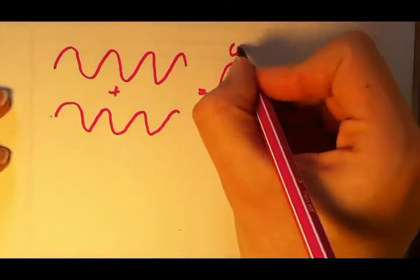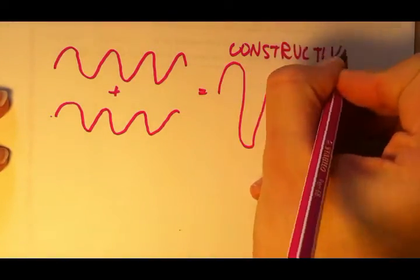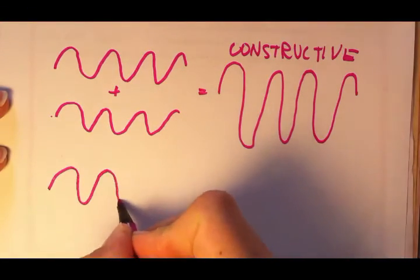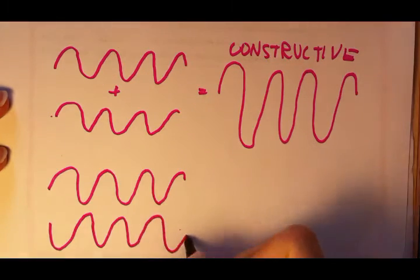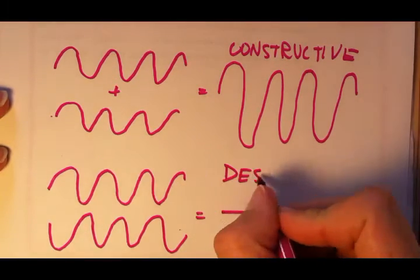When the two waves are added, at the places where they are both positive, they simply add their amplitude to produce constructive interference. At the places where one of the wave amplitudes is negative, the waves will interfere destructively.